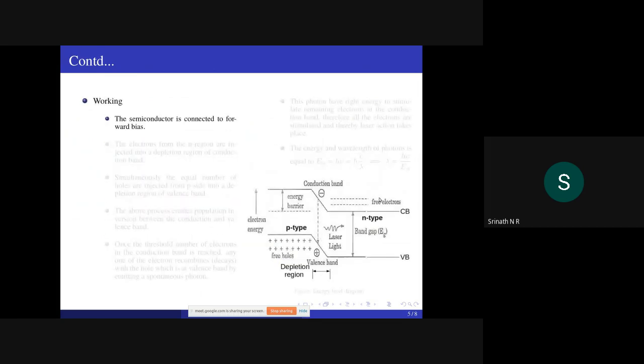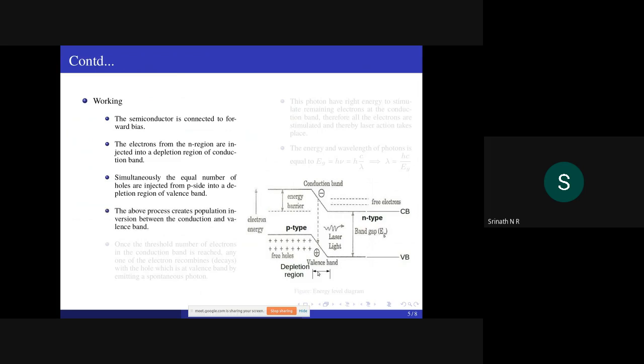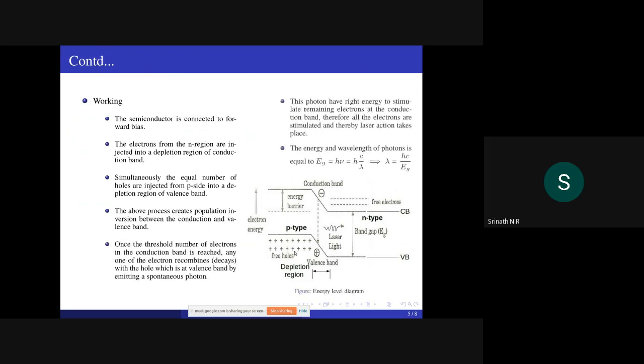Working: The semiconductor is connected to power. Electrons are injected from n-region into the depletion region of conduction band. At the same time, equal number of holes are injected from p-region into the depletion region of valence band. This process continues until threshold electron density is reached in the conduction band.